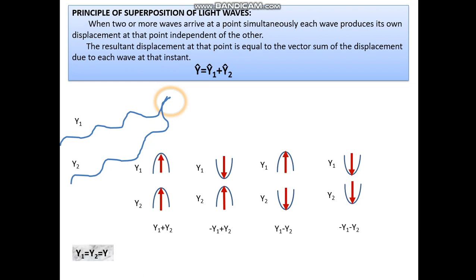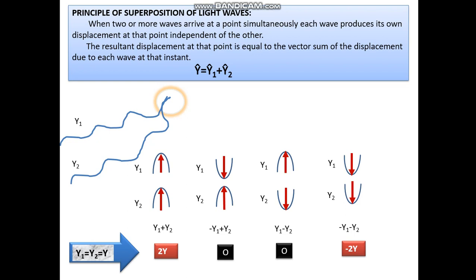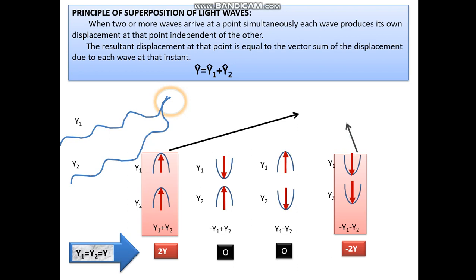If y1 is equal to y2, that is the amplitudes are the same, you get 2y, 0, 0, and minus 2y respectively. The crest-and-crest and trough-and-trough cases give what is known as constructive interference.